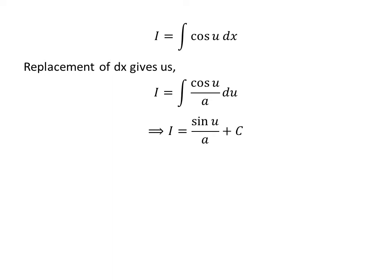This is a simple integration. 1 upon a is the constant. The integration of cosine of u is sine of u, so I is equal to sine of u upon a plus capital C. Capital C is the arbitrary constant of indefinite integral. Never forget to add this constant.